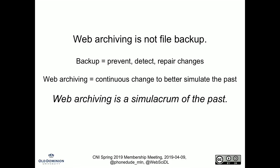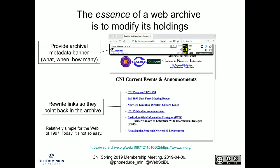In this audience it should be obvious: web archiving is not file backup. The essence of backup is you want to prevent, detect, and repair changes. In web archiving, we're continually changing the content to better simulate the past. So in essence, web archiving is a simulacrum of the past — it's not really the past. The essence of a web archive is to modify the holdings that it contains.